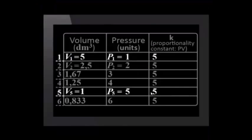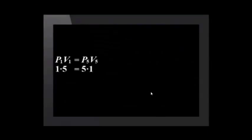For example, P1V1 equals P5V5. 1 times 5 equals 5 times 1. P3V3 equals P4V4.